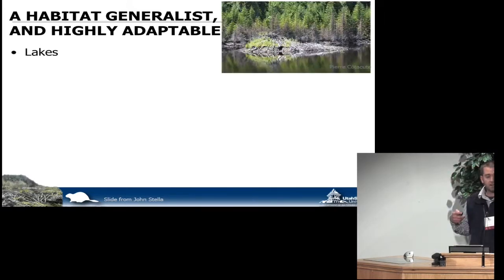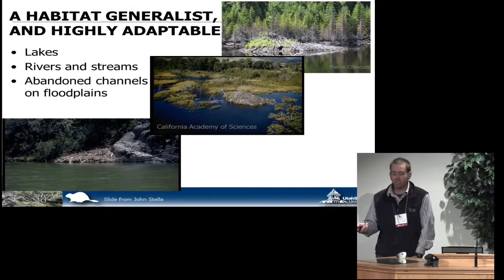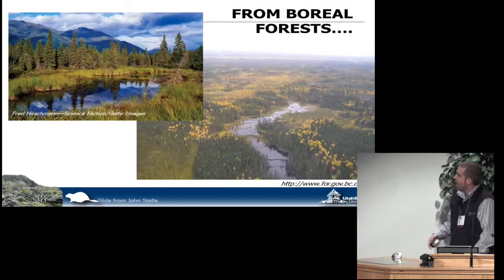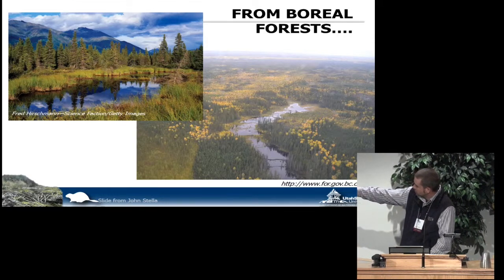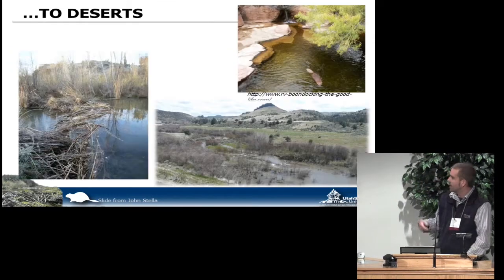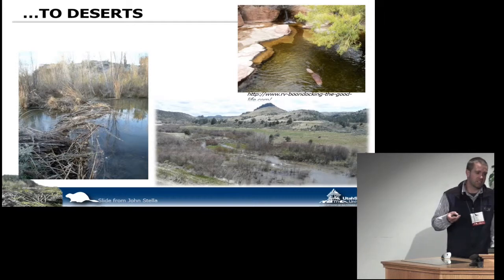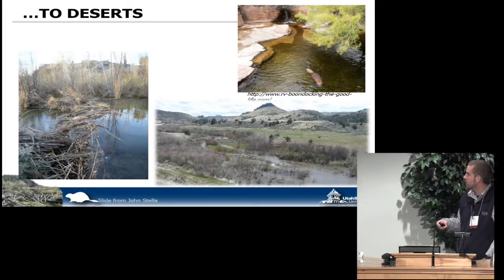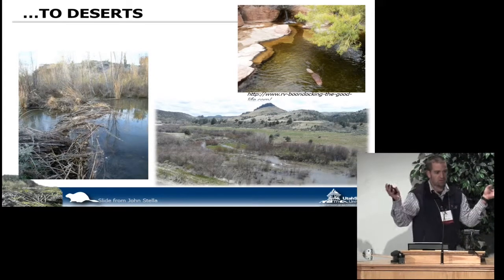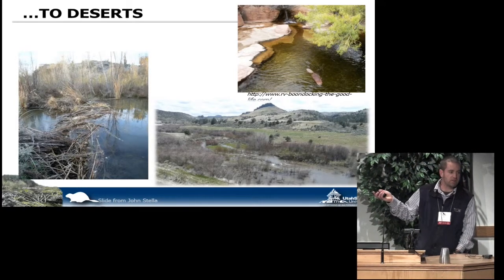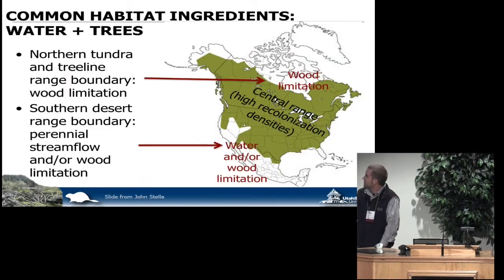Beaver are a habitat generalist. They're highly adaptable. We find them in lakes, rivers and streams, abandoned channels, floodplains, and wetlands - everywhere from boreal forest in the north to the deserts of the southwest. These right here are all individual beaver dams. Listening to Jim talk about the range of aspen, it's interesting how picky aspen are with their enormous range, and how undiscriminating these beaver are with an equally enormous - actually even broader - range.